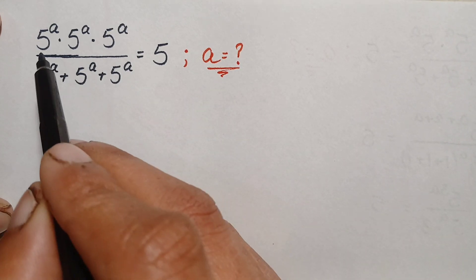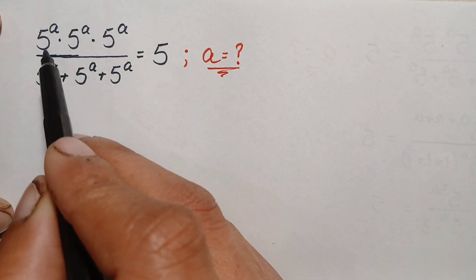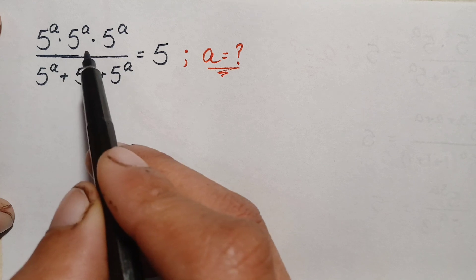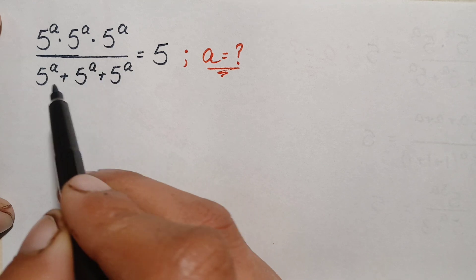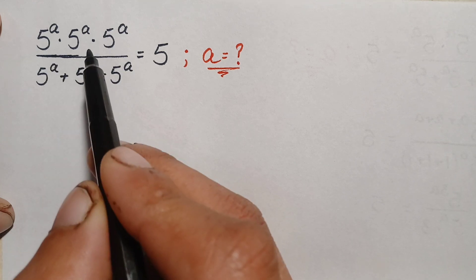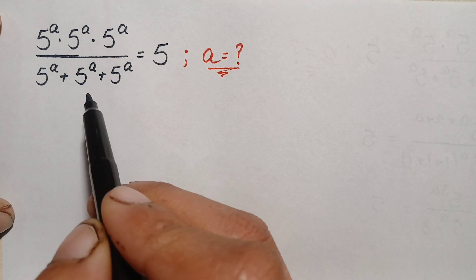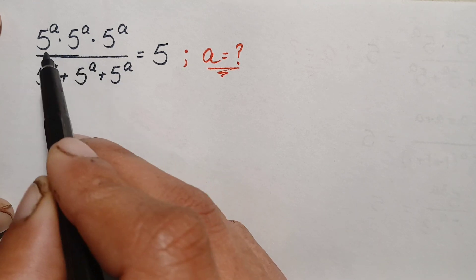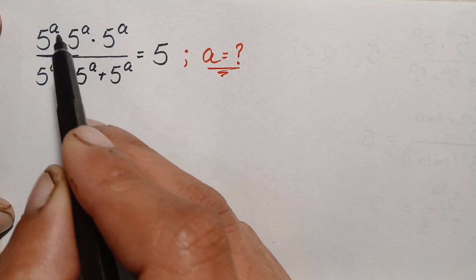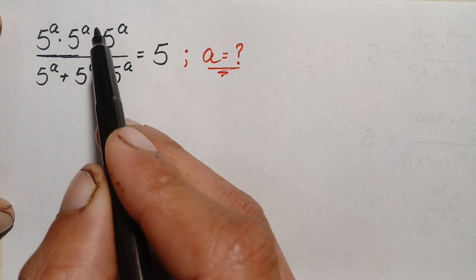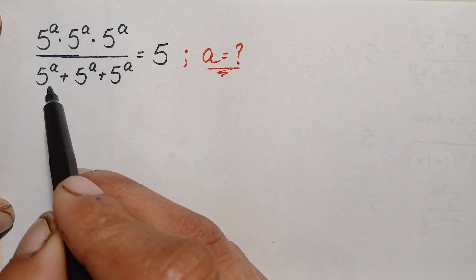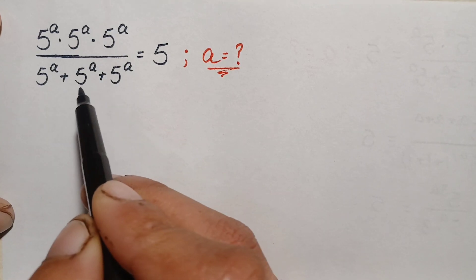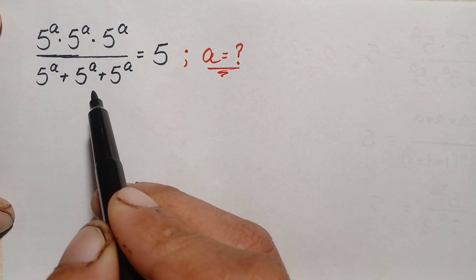Looking at the left hand side, the same number 5 raised to power a is multiplied 3 times in the numerator, and this same number is added 3 times in the denominator. In the numerator the base is the same, so we will add the powers. In the denominator this number is common, so we will take it out as a common factor.